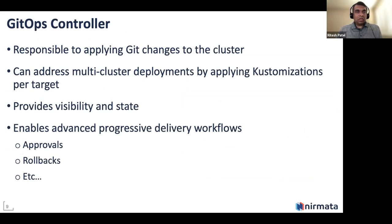Let's quickly look at what a GitOps controller does. The GitOps controller is responsible for applying changes to the cluster. The controller could run inside or outside the cluster. It's important that the controller can address multi-cluster deployments, especially when customizations are required per cluster. The controller also provides visibility and state — clear visibility into which change was deployed on which cluster and whether successfully. It should also enable advanced progressive delivery workflows such as approvals, rollbacks, and multi-cluster deployments.